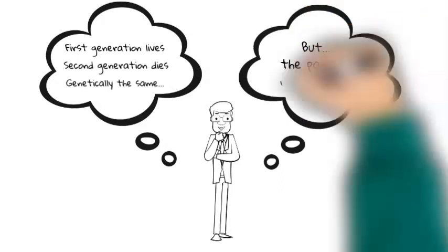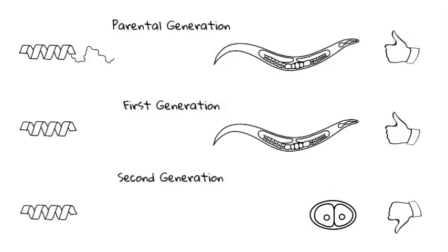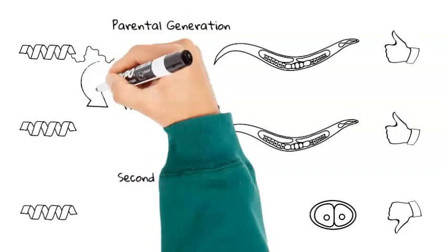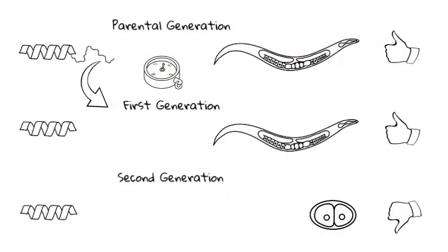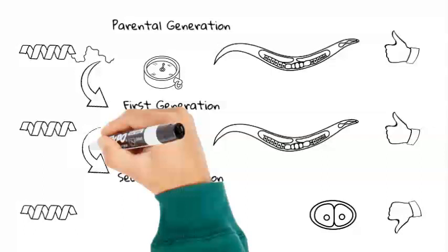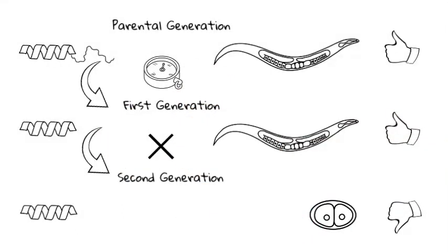Perhaps the difference lies in who the parent was. Taking you back to this picture, it seems that the generation whose parents have the normal copy of the protein, and therefore the guide, are fine. The parent seems to be able to give the protein instructions on how to find its right location in this generation of worms. This is however not the case for the generation that follows. Their parents do not provide these instructions, which is why the second generation fails to develop.